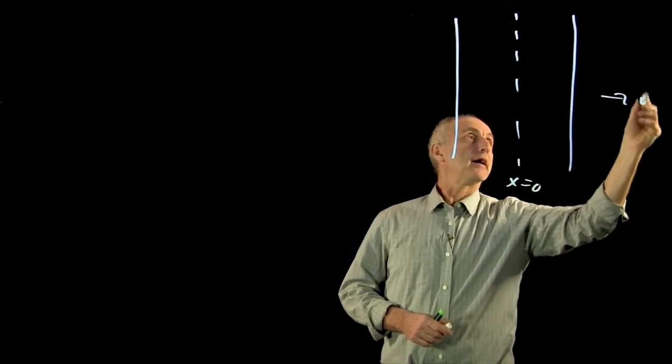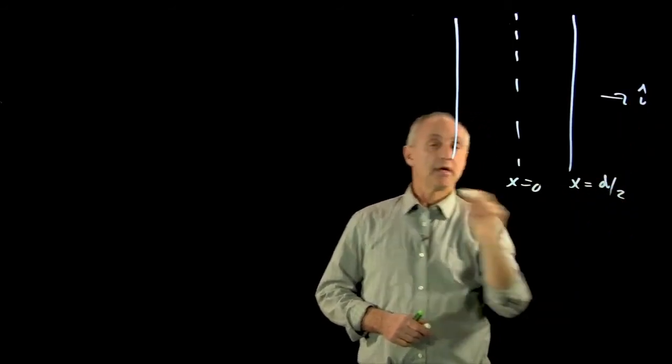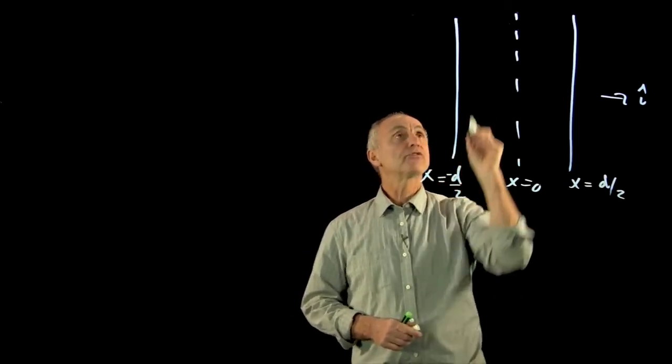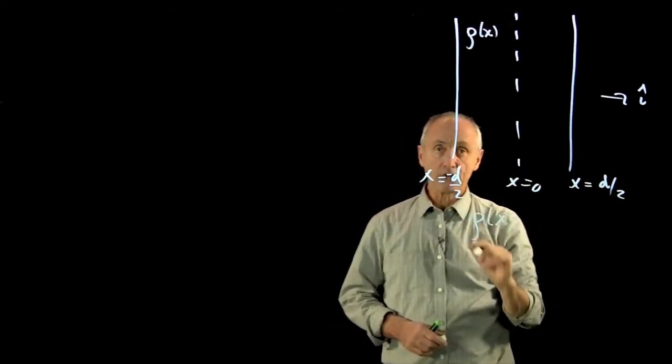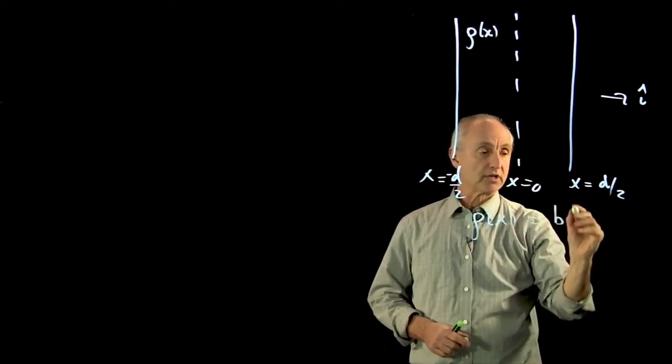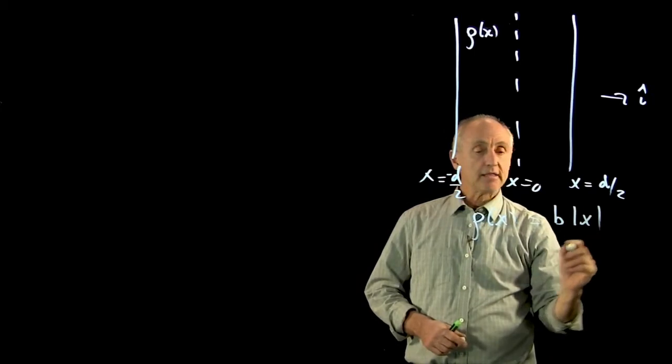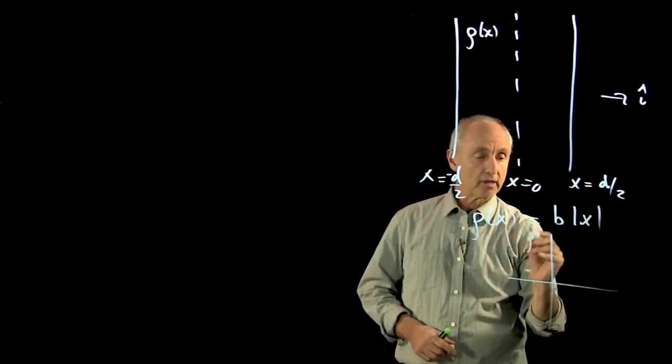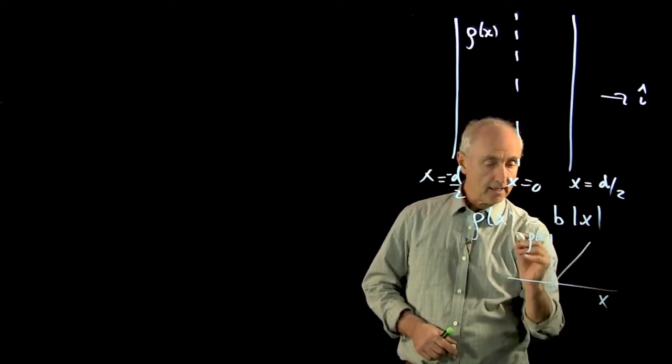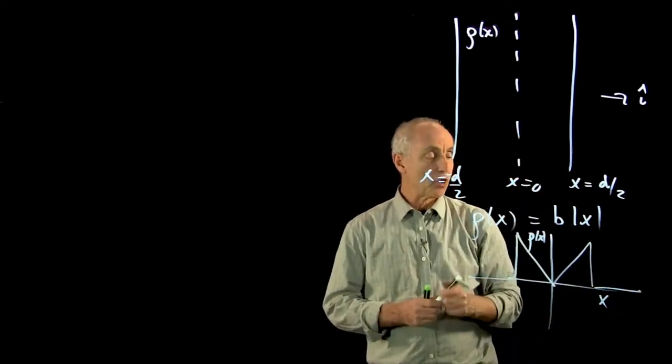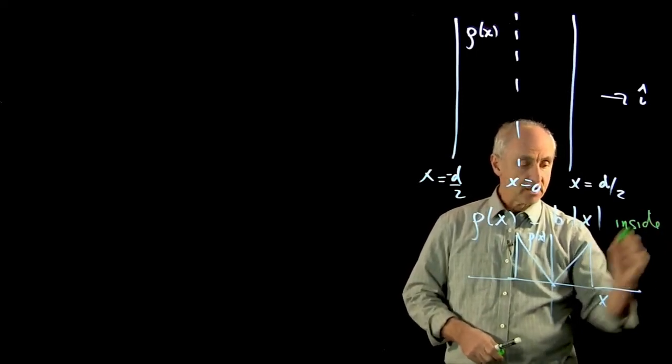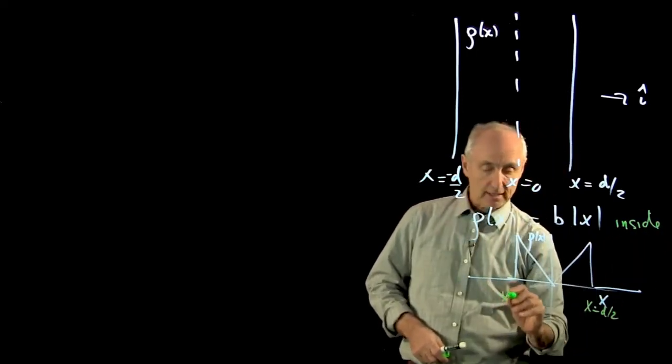Now we're going to consider even a more difficult problem, where we have a slab. And I'm going to choose a coordinate system where this is x equals 0 i hat, x equals d over 2, x equals minus d over 2. But now our slab has a charge density that is non-uniform. And what I'm going to describe is a positive charge density. So I'm going to have a positive constant times the absolute value of x. And this tells us if we plotted rho of x versus x, it's going to look something like that. And it goes to 0 outside the slab. So this is only inside the slab. So that would be x equals d over 2 and x equals minus d over 2.